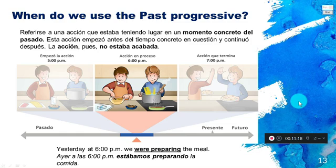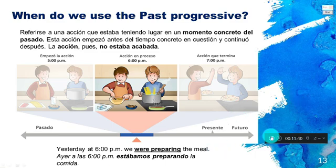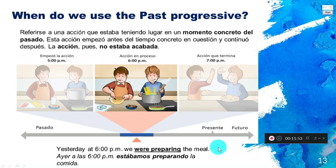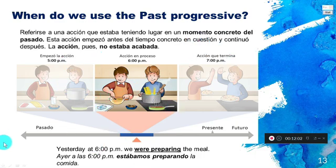When do we use the past progressive or past continuous? We use it to refer to a time in the past when an action was continuing, in process, or in progress. For example: 'Yesterday at 6pm, we were preparing the meal' — an action that began in the past and was in progress for a period of time.